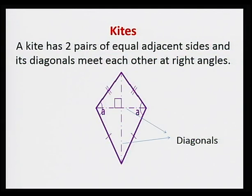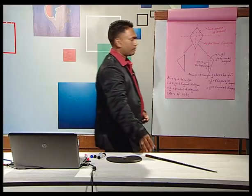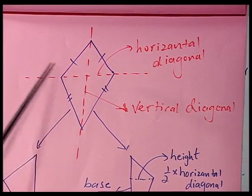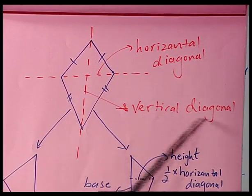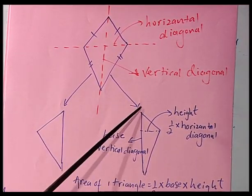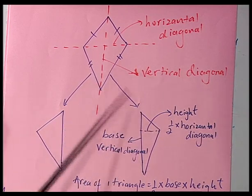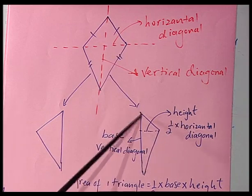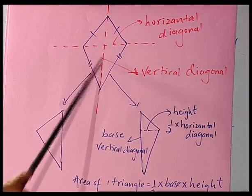Let's consider kites. A kite has two pairs of equal adjacent sides, and its diagonals meet each other at right angles. Now let's see how to calculate area of kites. Look at this kite — the two diagonals meet perpendicularly. This one is called the horizontal diagonal, and this one the vertical diagonal. If I cut this kite into two, I will have two equal triangles. The height of the triangle will be half the horizontal diagonal, and the base of the triangle will be the vertical diagonal of the kite.